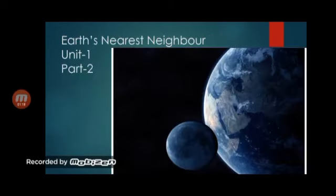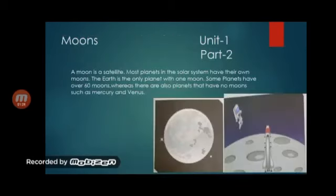Earth's nearest neighbor. The Moon is the Earth's nearest neighbor. A moon is actually a satellite. Most planets in the solar system have their own moons. In fact, the Earth is the only planet with one moon. Some planets have over 60 moons, whereas there are also planets that have no moon, such as Mercury and Venus.